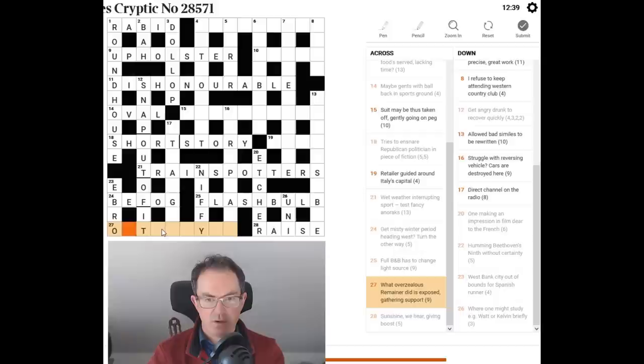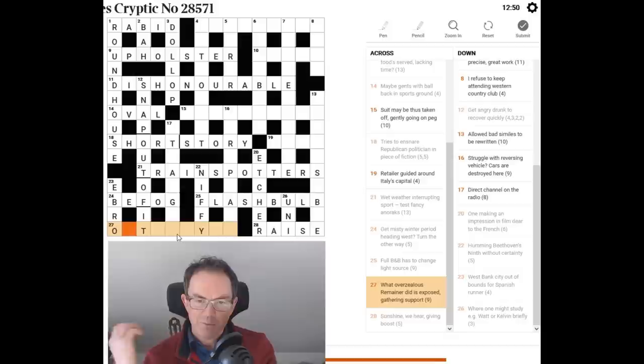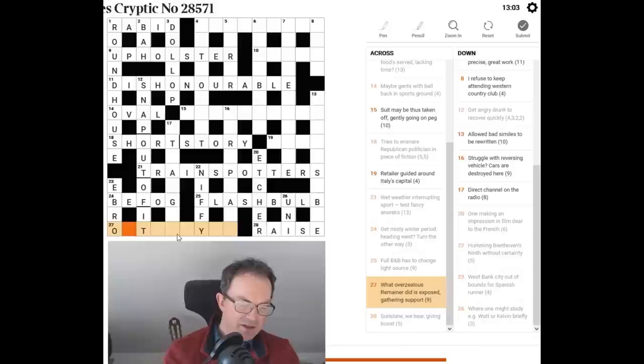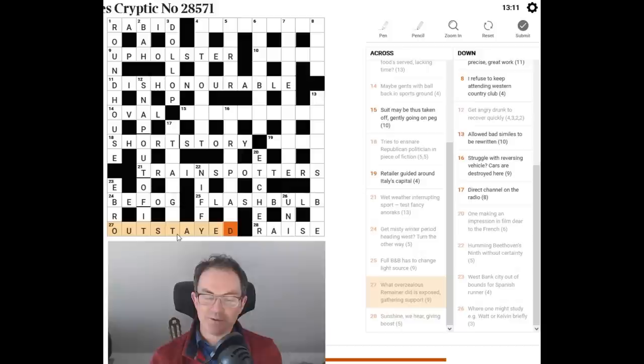Now. That's. This is going to begin with out. Isn't it? What overzealous remainer did is exposed gathering support. I was thinking out stayed. Oh come on. What overzealous remainer did. Oh well if you. I think that's right actually. I think it is out stayed. It's very hard for any Brit to read anything about remainers and Brexiters without it having a political colouring. But I don't think. I think the capitalised R here is deliberately misleading. Because I think what the clue is getting at is a guest. If you had a party and a guest remained for too long. You would say they'd outstayed their welcome. So an overzealous remainer. What an overzealous remainer did is they outstayed.